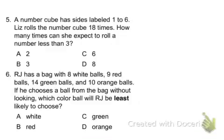Let's look at numbers 5 and 6 in the study guide. A number cube has sides labeled 1 to 6. Liz rolls a number cube 18 times. How many times can she expect to roll a number less than 3?